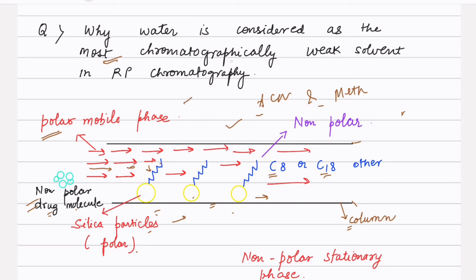That is why water is considered the most chromatographically weak solvent. To decrease the polarity, we add organic modifiers like ACN and methanol to our water or buffer. These are also polar in nature but less polar compared to water, so adding ACN or methanol causes the peaks to elute earlier and also improves the peak shape.